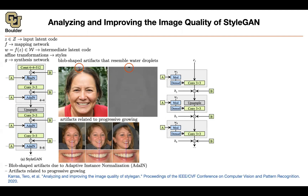Let's modify AdaIN. To do so, you use a modulation-demodulation process that replaces AdaIN. You still have affine transformations and Ws — these Ws are not weights, they are coming out of your latent code. Modulation-demodulation, then convolution. The first layer is a trainable constant and the next layers take outputs from the previous layers. B is your bias, which you add after doing your convolution.